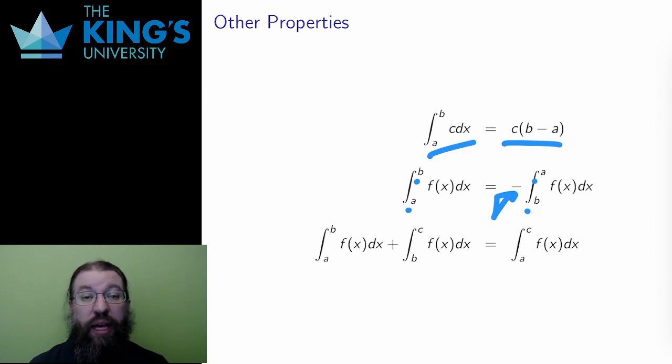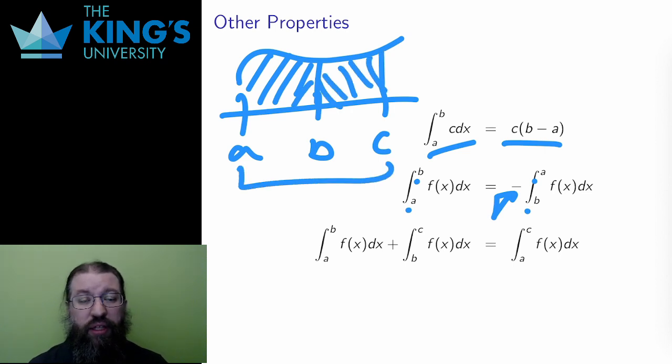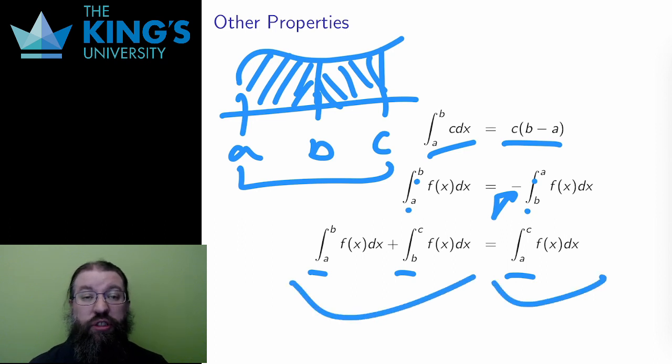Finally, if I integrate from a to b, and then from b to c, I am calculating the area under the graph from a to b, and then from b to c. Those two areas can be put together into one, going all the way from a to c. This equation says that those two are the same, and this makes sense. Whether I measure the area in one piece or in two pieces, it should still be the same area.